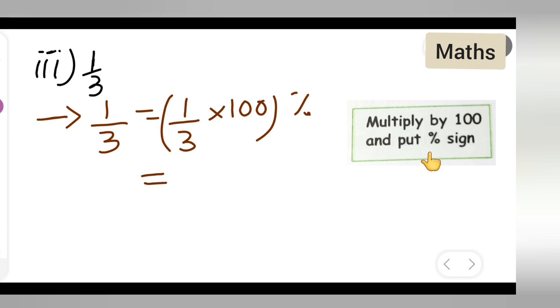Now, this you all can write it as, multiply the numerator. 100 multiplied by 1 is 100 upon, this will be denominator will be 3 percent.